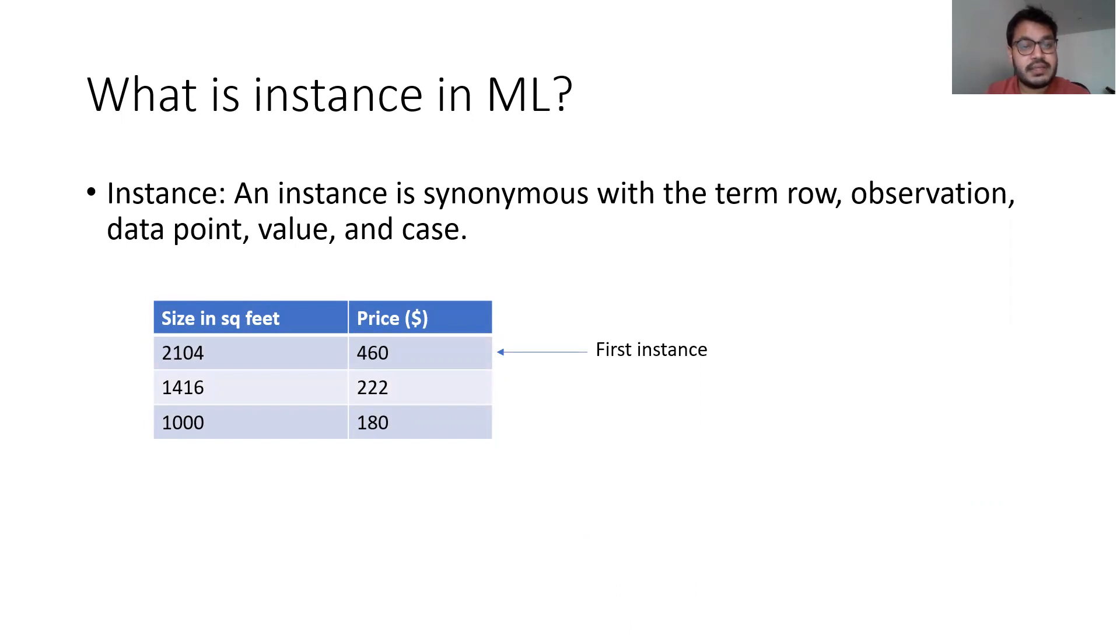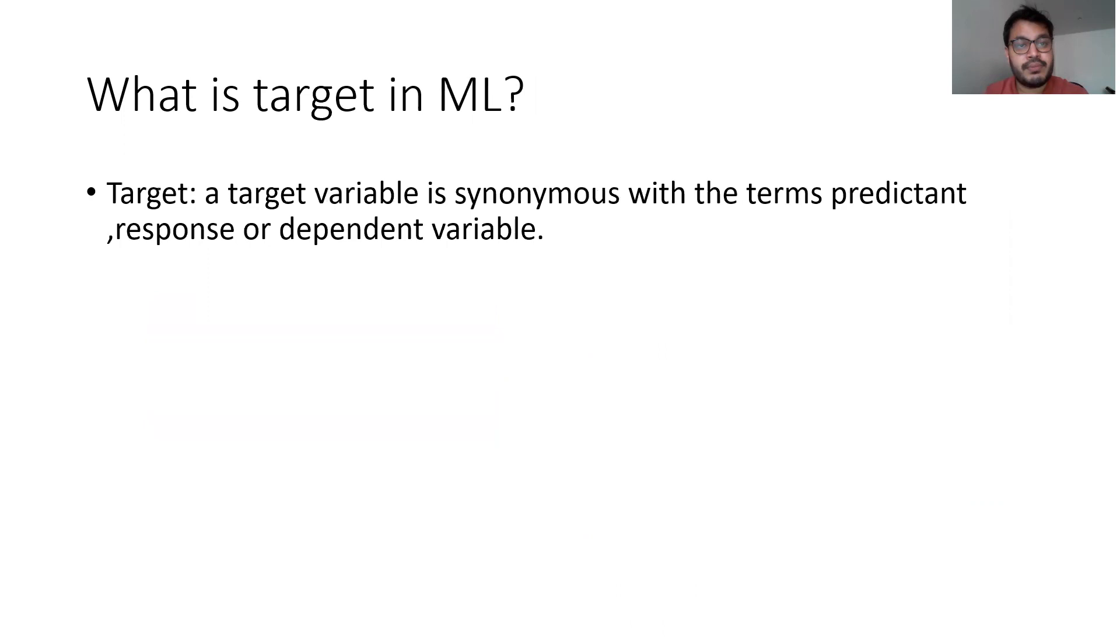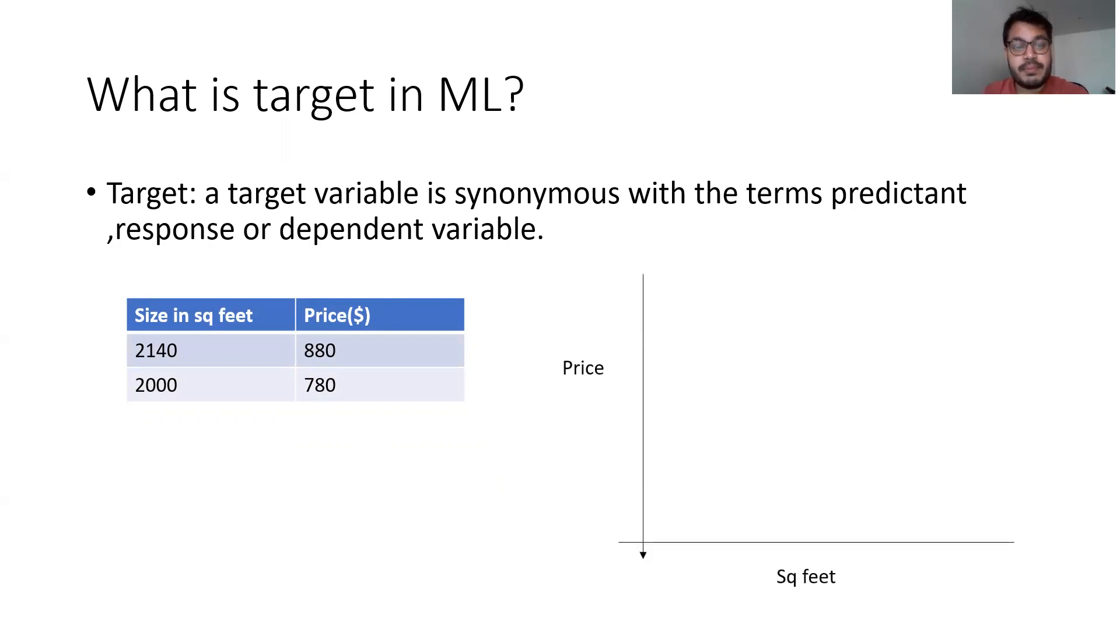What is target in machine learning? A target variable is synonymous with the terms predicant, response, or dependent variable. In this house pricing data, I have a square feet size and its price. The price denotes the target, which is the predicant, response, or dependent variable. Price is what we predict based on the size of the house. This is my target.